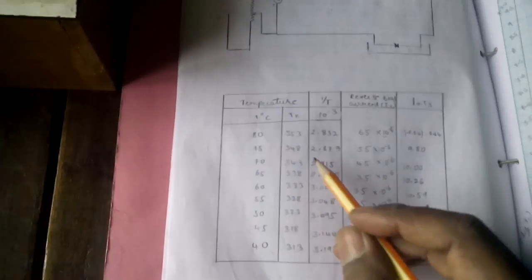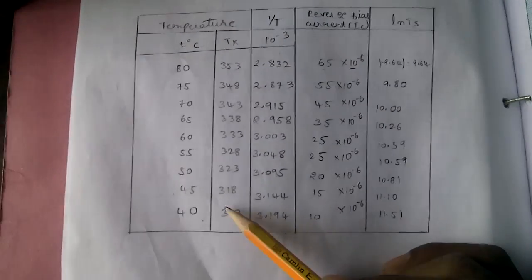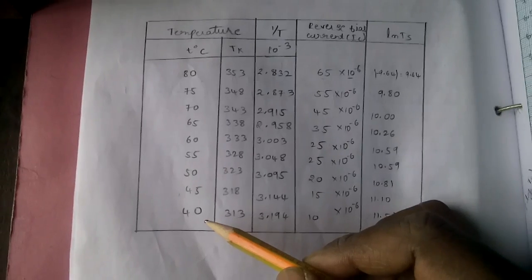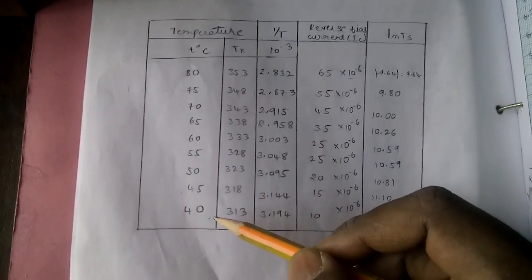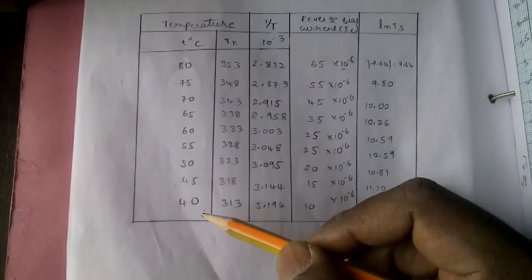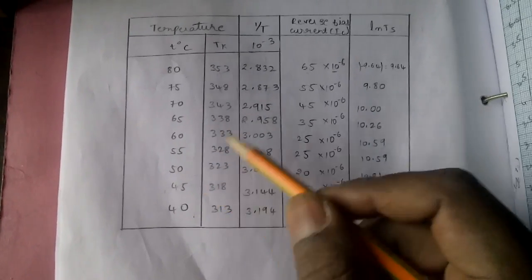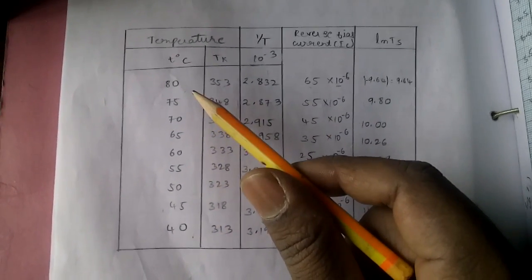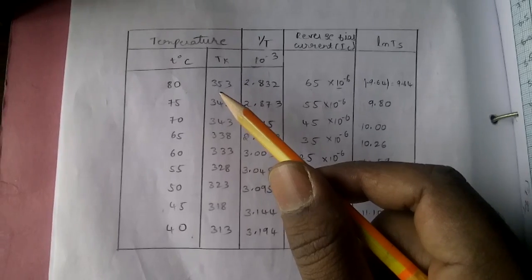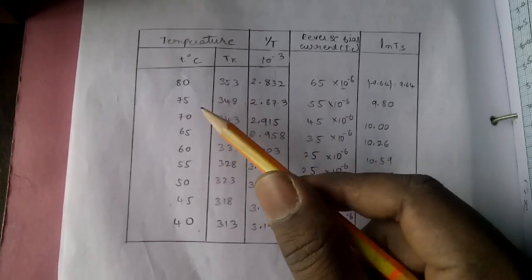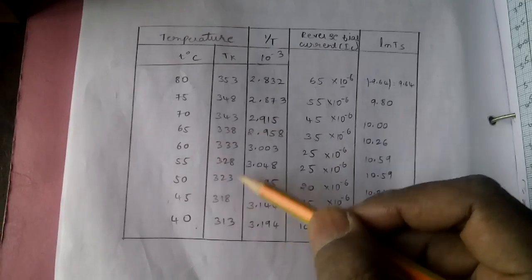Observe the current value for every five degrees. Note the readings clearly up to 40°C. Since room temperature is 27°C, going from 80°C to 40°C takes about half an hour, and 40°C to 30°C takes more than one hour — that's why we take readings up to 80°C. Now convert the degrees to Kelvin: 80 + 273, 75 + 273, and so on to get the Kelvin values.